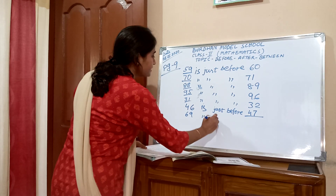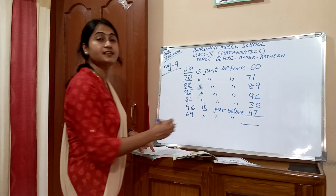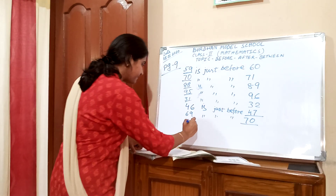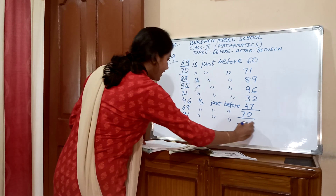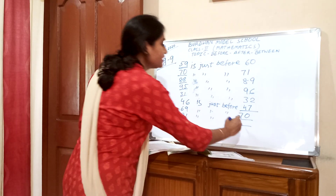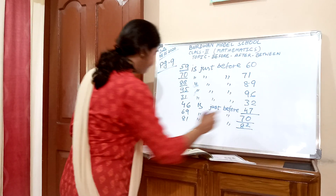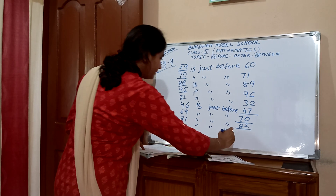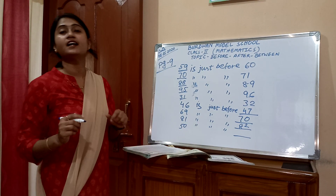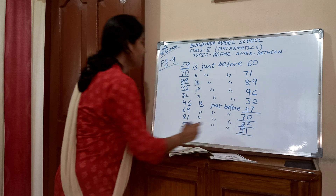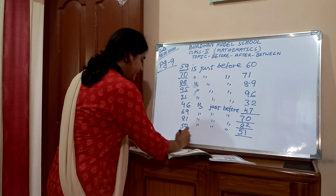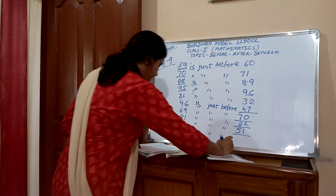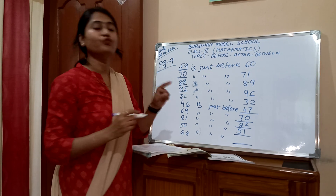69 is just before dash — 69 is just before 70. 81 is just before dash — 81 is just before 82. 50 is just before 51. And 99 is just before dash — 99 is just before 100.